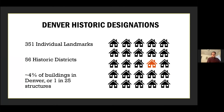We're going to start with historic designations. At the moment, Denver has 351 individually designated landmarks, and we have 56 historic districts. A few of them are quite large, but most are actually fairly small — our smallest is four properties, four individual buildings within the district. All in all, it makes up about 4% of Denver's buildings, so 1 in 25 structures.